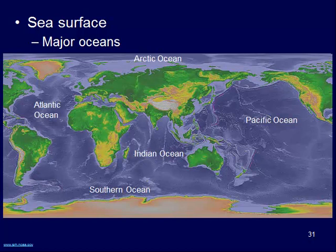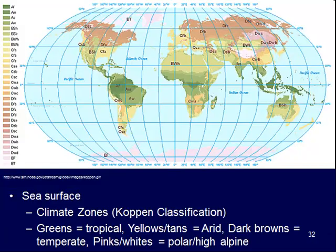These oceans wrap from the equator, some of them, and go all the way up towards the northern latitudes — a very cold environment. So they kind of stretch across different climate zones. In each of these different zones, we have different conditions: warm conditions, wet conditions, dry conditions, and very frigidly cold conditions.